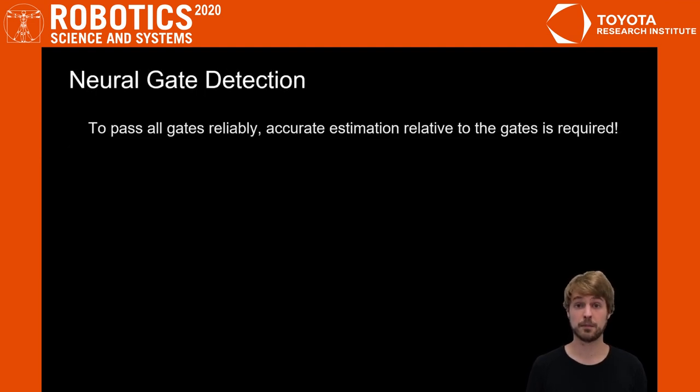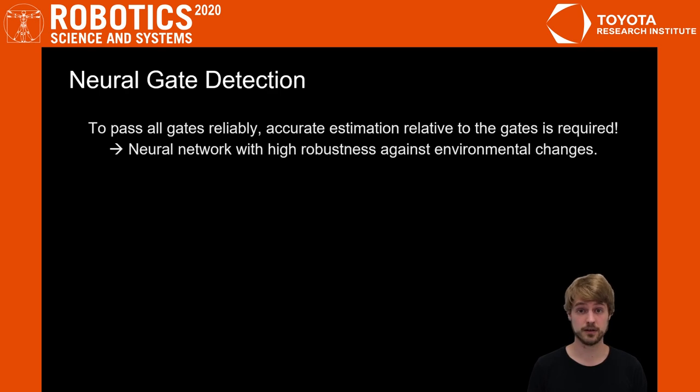First and foremost, to pass all gates reliably, we need an accurate state estimate relative to the gates. We do this by detecting gates using a neural network with high robustness against environmental changes.